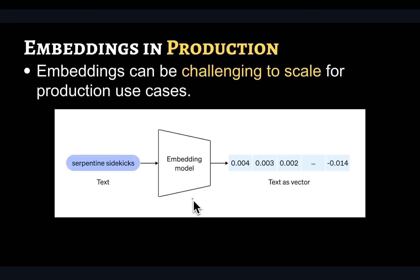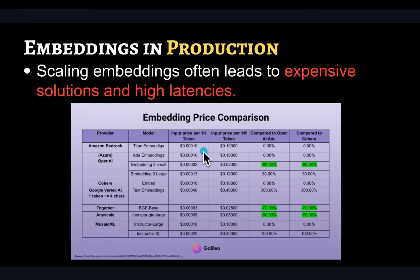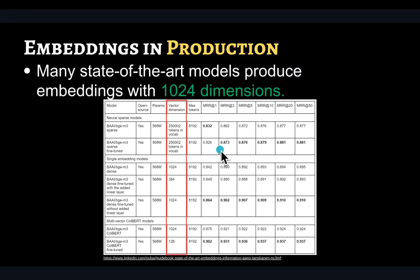Since you are going to be computing embeddings for your input text, there are two different components of the cost associated with it. The first one is the computation cost. Depending on which embedding model or API provider you use, there is a fixed cost you have to pay in terms of embedding compute per million or per thousand tokens. This is largely dependent on your API provider and is usually a one-time payment for your dataset creation. But there is a storage cost that usually gets ignored but can be substantial.